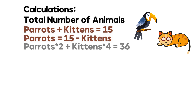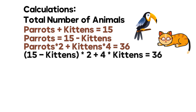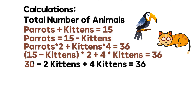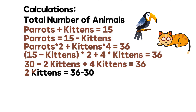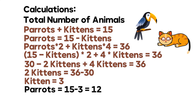Based on the number of legs: 2 × (number of parrots) + 4 × (number of kittens) = 36. Replacing parrots with (15 − kittens): (15 − kittens) × 2 + 4 × kittens = 36, which gives 30 − 2 kittens + 4 kittens = 36. After simplification: 2 kittens = 36 − 30 = 6, so there are 3 kittens in the store. Number of parrots = 15 − 3 = 12.